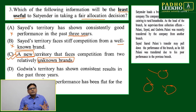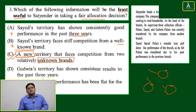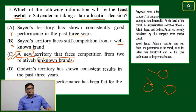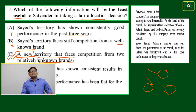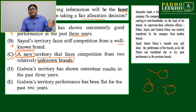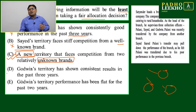Why is this not useful? It is not giving any measurable data. It is not going to be most useful — it is going to be least useful. You can't rely on this information for allocation. As a branch manager, Godwin's territory has shown consistent results — you can't ignore that. Options A, B, D, and E all have background data, track records, and certain information.